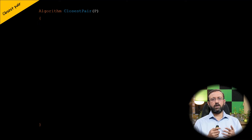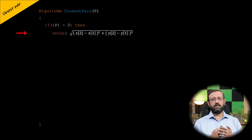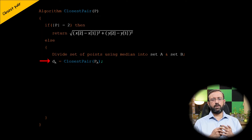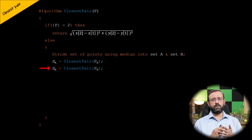Let us look at the closest pair algorithm. This algorithm takes a set of points P as its parameter. If the problem is small — that is, only two points — return the Euclidean distance of those two points. If there are more than two points, divide the set equally using the median into partition A and partition B. Then recursively call the closest pair algorithm on partition A (returning distance dA) and on partition B (returning distance dB). Find the minimum of dA and dB; call this distance d.